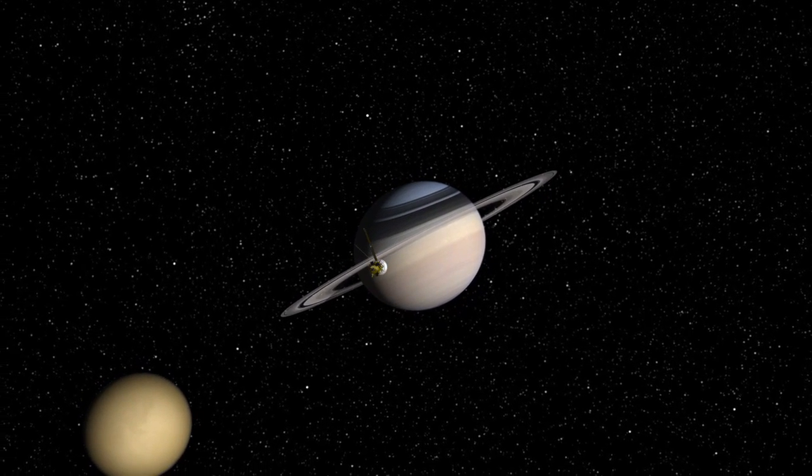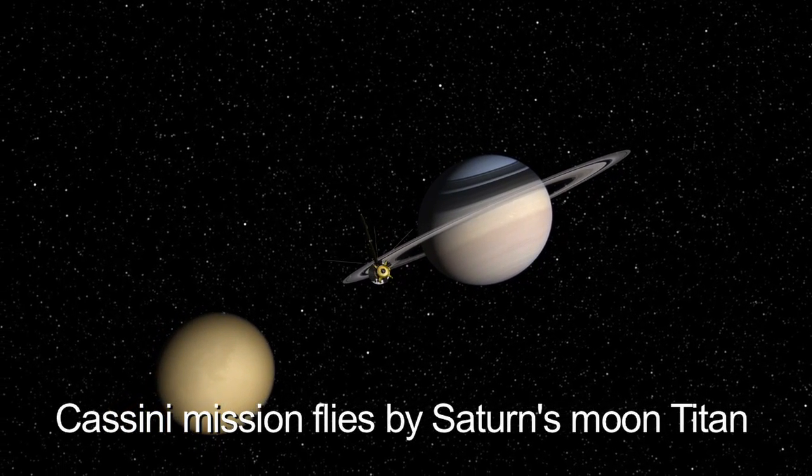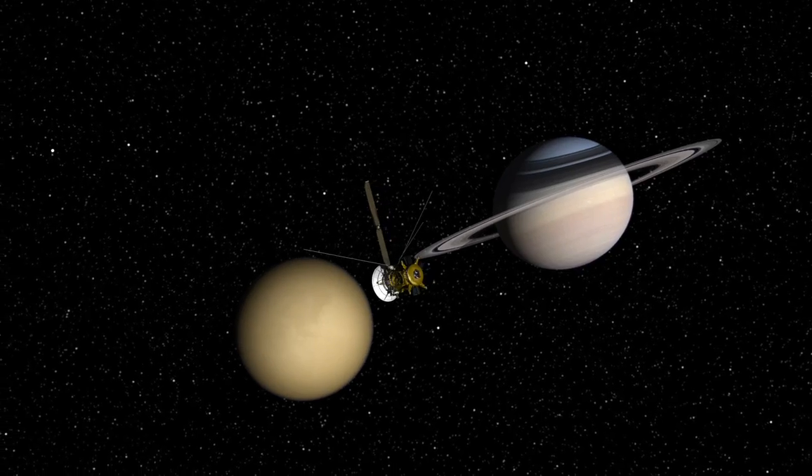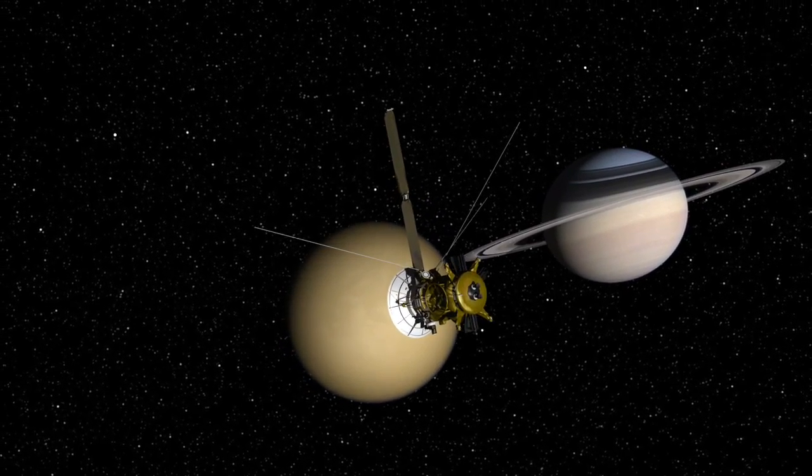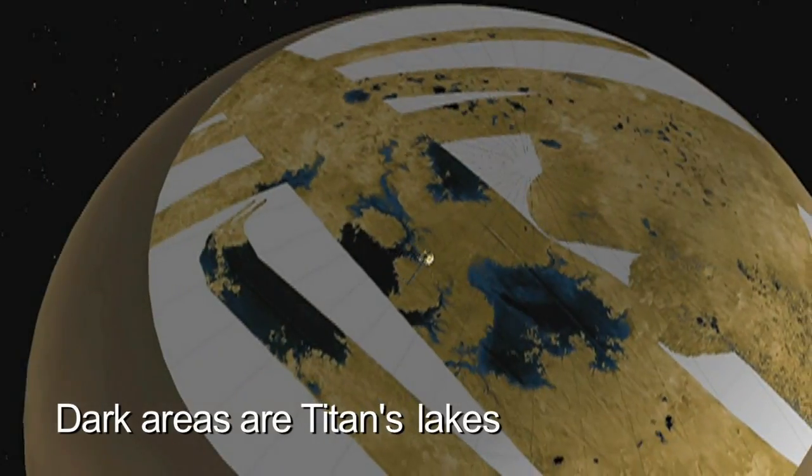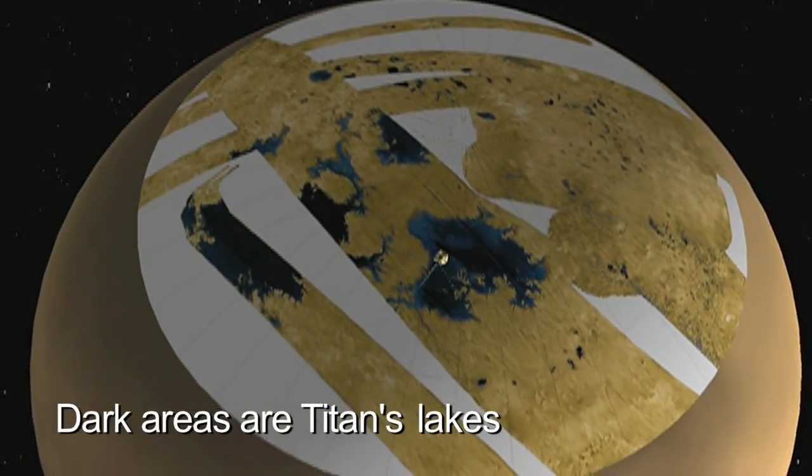One of the key discoveries that the Cassini orbiter and the Huygens probe revealed for us was discovering the liquid lakes on Titan. Cassini was able to look at the lakes, get a sense of the coarse composition of the lakes, but nothing about the organic molecules that are dissolved in the lakes.